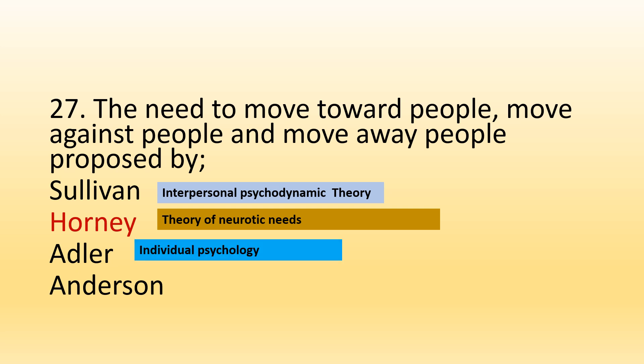Adler introduced individual psychology, presenting many concepts including striving for superiority and birth order, which he said influence a child's personality. As for Anderson, he introduced the Adaptive Control of Thought (ACT) theory, focusing on brain functions, how neurons interact, and how the brain manages procedural memory.